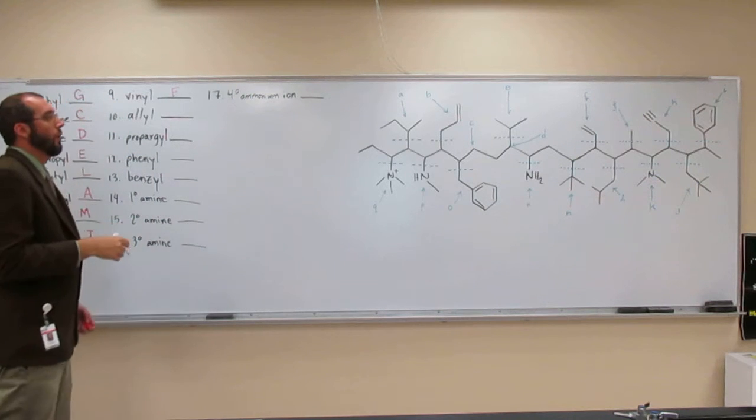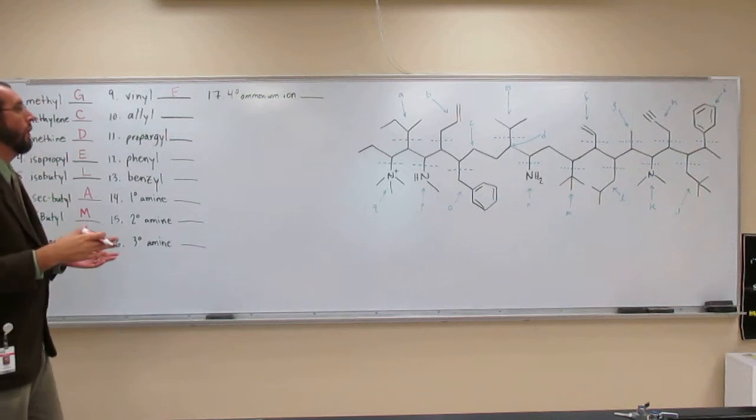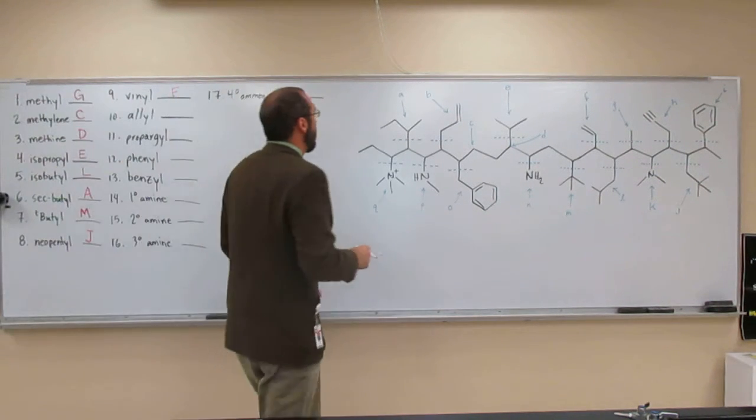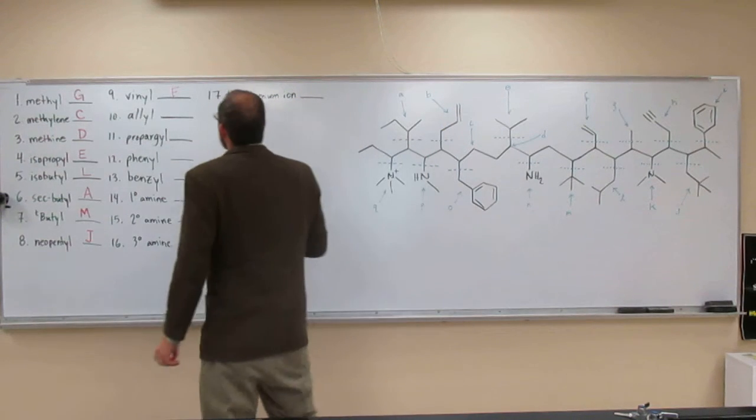An allyl group has one carbon in between the substituent and the double bond. So right there, B.